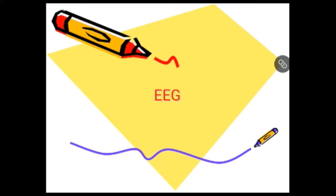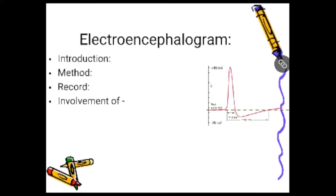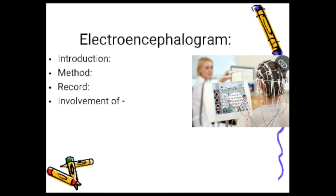Today we discuss EEG — full form electroencephalogram. It is the study of electrical activity of the brain and the record of electrical activity of cortical neuronal units in a volume conductor. The spontaneous activity recorded is due to graded or summated post-synaptic potentials in the brain neurons that underlie the recording electrodes at the surface of the scalp. It is due to involvement of a large number of neurons and their synaptic connections.